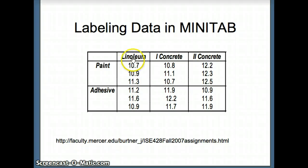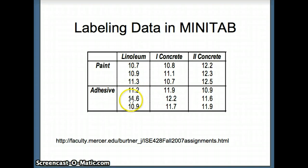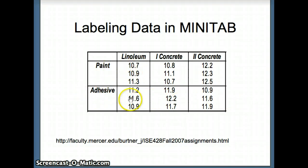The results include: paint and linoleum gave 10.7, 10.9, and 11.3 errors; adhesive and linoleum gave 11.2, 11.6, and 10.9 errors, and so on for the rest of the table. We want to see: are the means the same for paint and adhesive? Are the means for linoleum, concrete 1, and concrete 2 the same? In other words, is there a significant row effect? Is there a significant column effect? And most importantly in two-way ANOVA, is there an interaction?